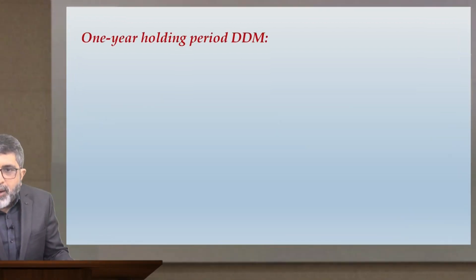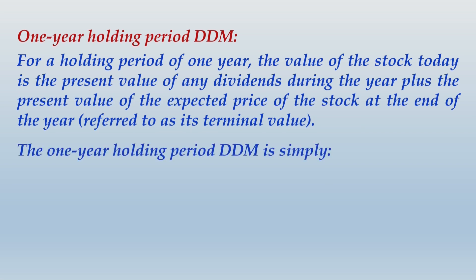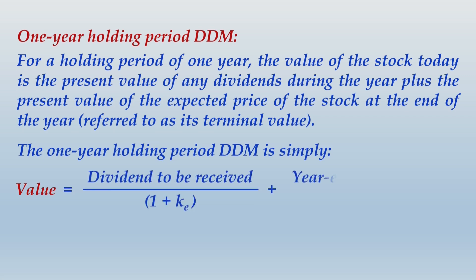For a holding period of one year, the value of the stock today is the present value of any dividends during the year plus the present value of the expected price of the stock at end of the year — referred to as its terminal value. The one-year holding period DDM is: Value = D1/(1+K) + P1/(1+K). In shorter notation with a common denominator: P0 = (D1 + P1)/(1+K). That is the formula notation provided.